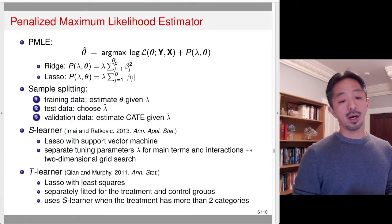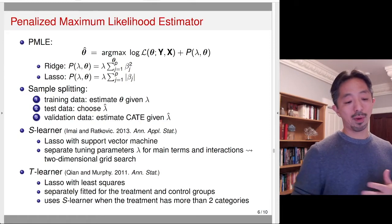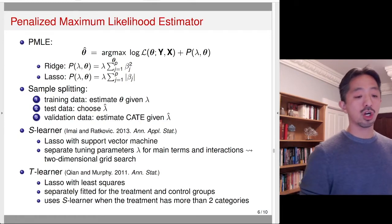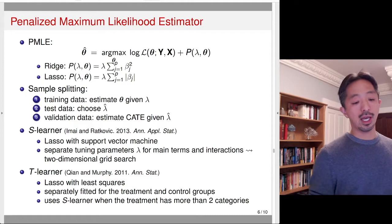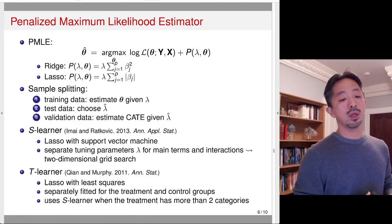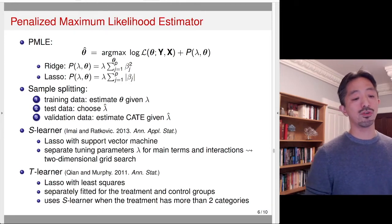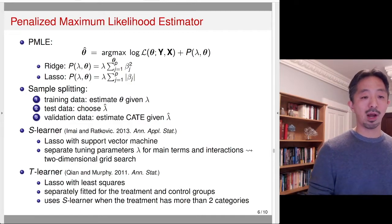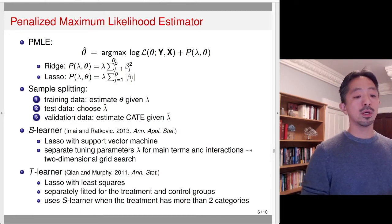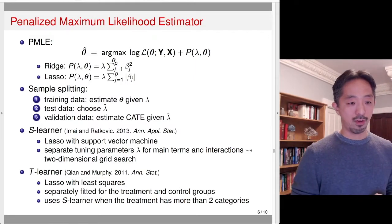Another example is T-Learner, used by Huynh and Murphy back in 2011. They used LASSO with tree squares and separately fitted it for the treatment and control groups. When the treatment has more than two categories, they used S-Learner — fitting a single model with LASSO constraints. These are examples of how people use the penalized maximum likelihood estimator to estimate the conditional average treatment effect.